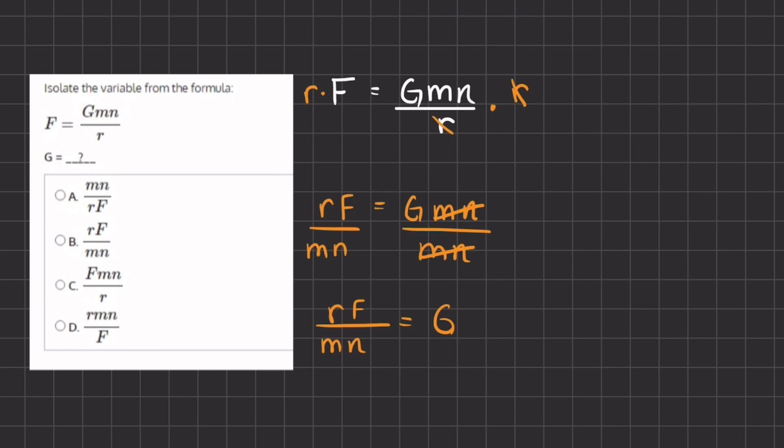So g equals rF divided by mn and if we take a look here that corresponds exactly with answer b.